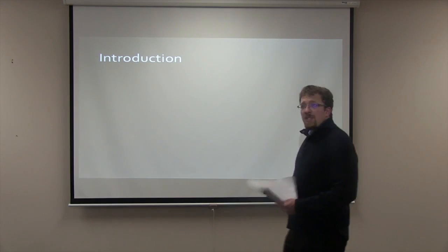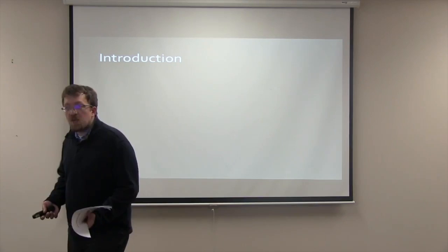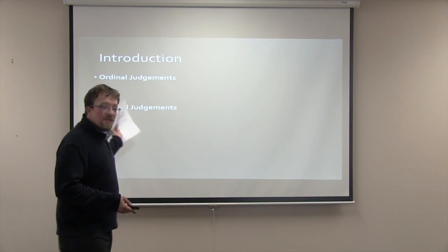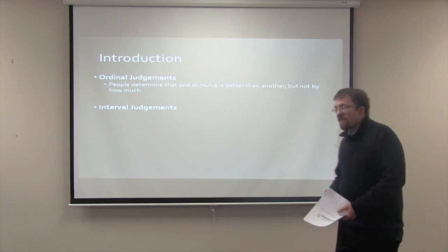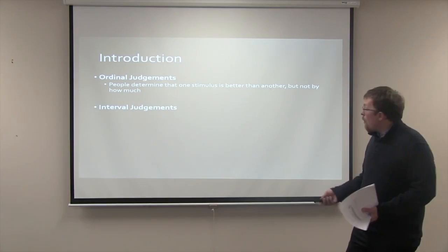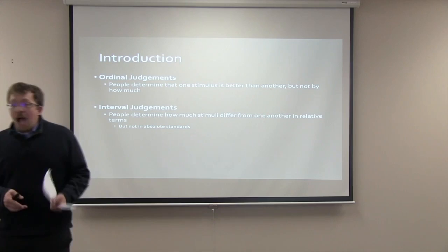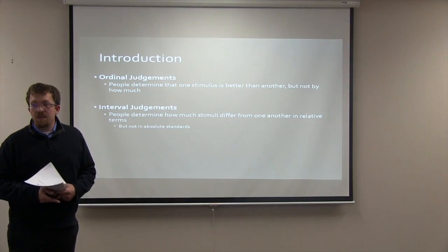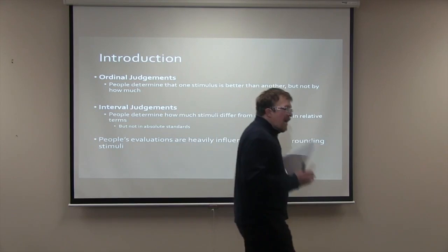Related to this point, other researchers have shown that when assessing a stimulus, people represent where in the distribution that stimulus lies rather than the absolute value of the stimulus, by making either an ordinal judgment or an interval judgment. An ordinal judgment suggests that people can determine which stimulus is better but not by how much, while an interval judgment refers to the idea that people can determine how much stimuli differ from one another but in relative terms and not in absolute standards. Essentially, people's evaluations are heavily influenced by their surroundings.